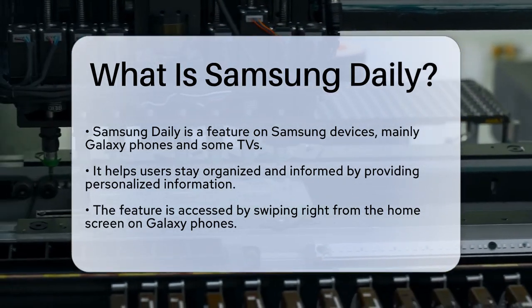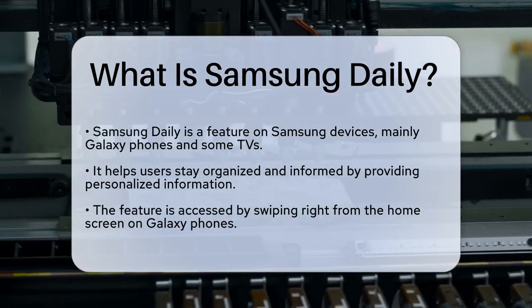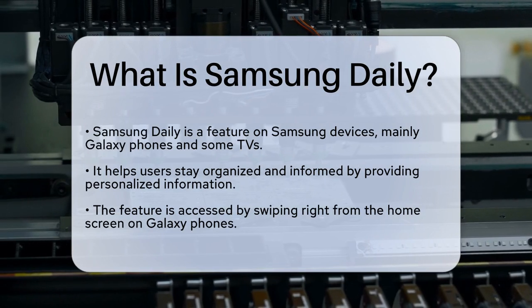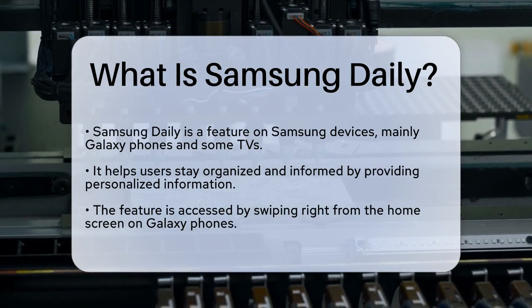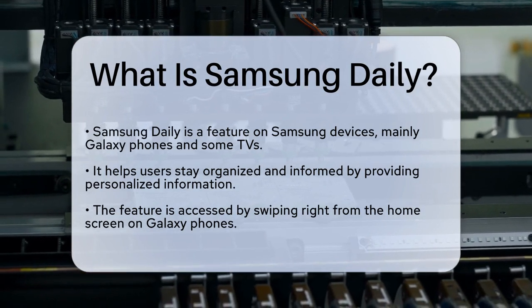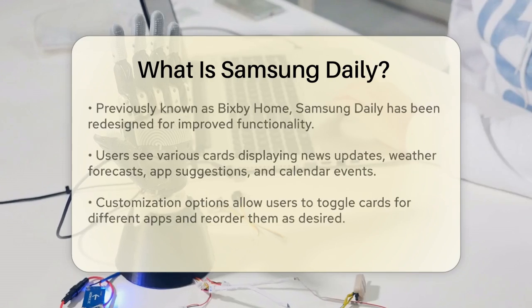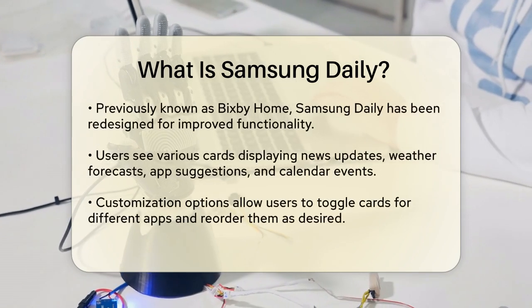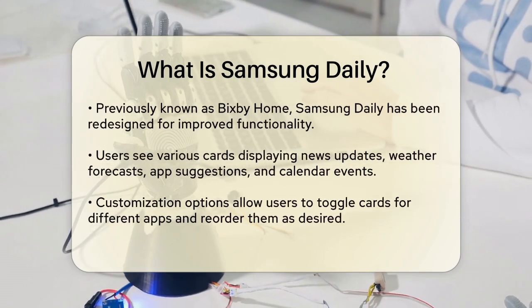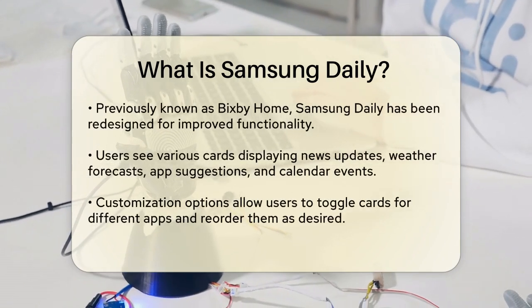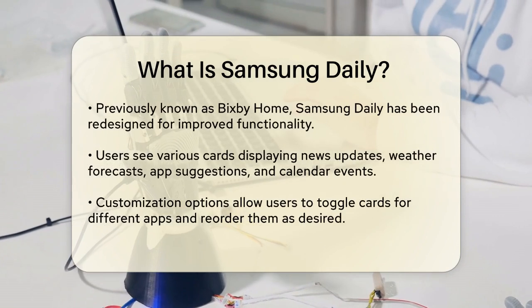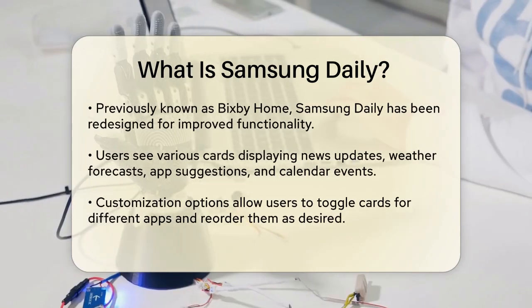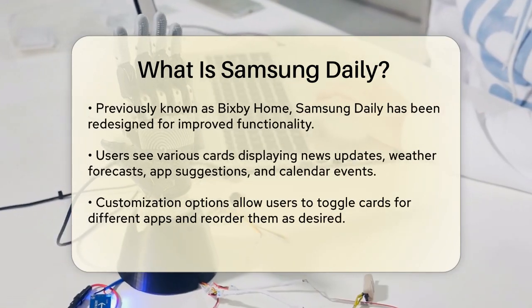When you access Samsung Daily, you'll see a variety of cards that display different types of information. These cards can include news updates, weather forecasts, app suggestions, and even your calendar events.